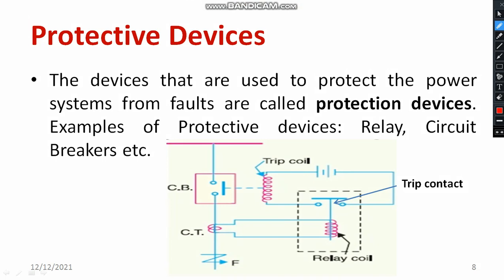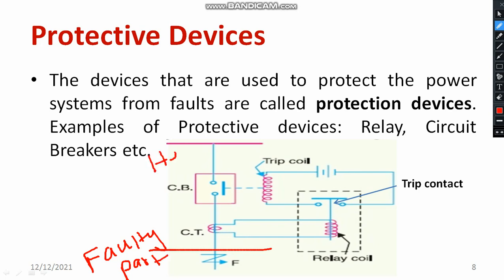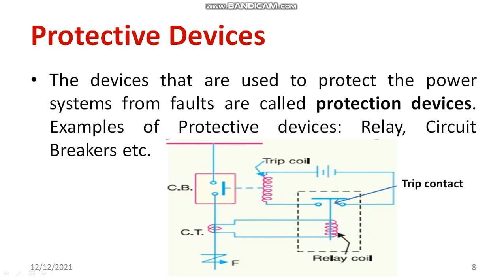The faulty portion is thereby isolated from the healthy portion. Once the CB contact is open, no current flows through there, and the faulty part is isolated from the healthy portion. This is how the relay and circuit breaker operate together as protective devices.